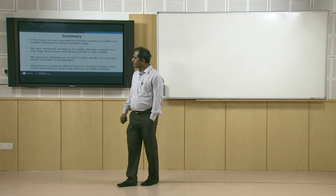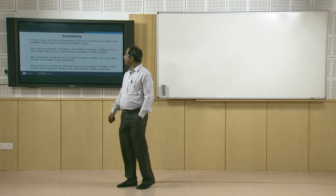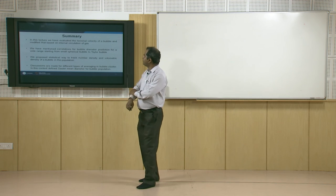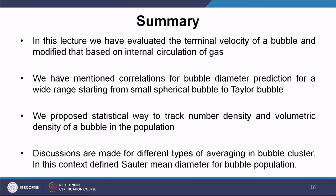To summarize this lecture: we evaluated the terminal velocity of a bubble and modified it based on internal circulation of the gas. We presented correlations for bubble velocity prediction from small spherical bubbles to the Taylor bubble regime. We also proposed a statistical way to track number density and volumetric density distributions.